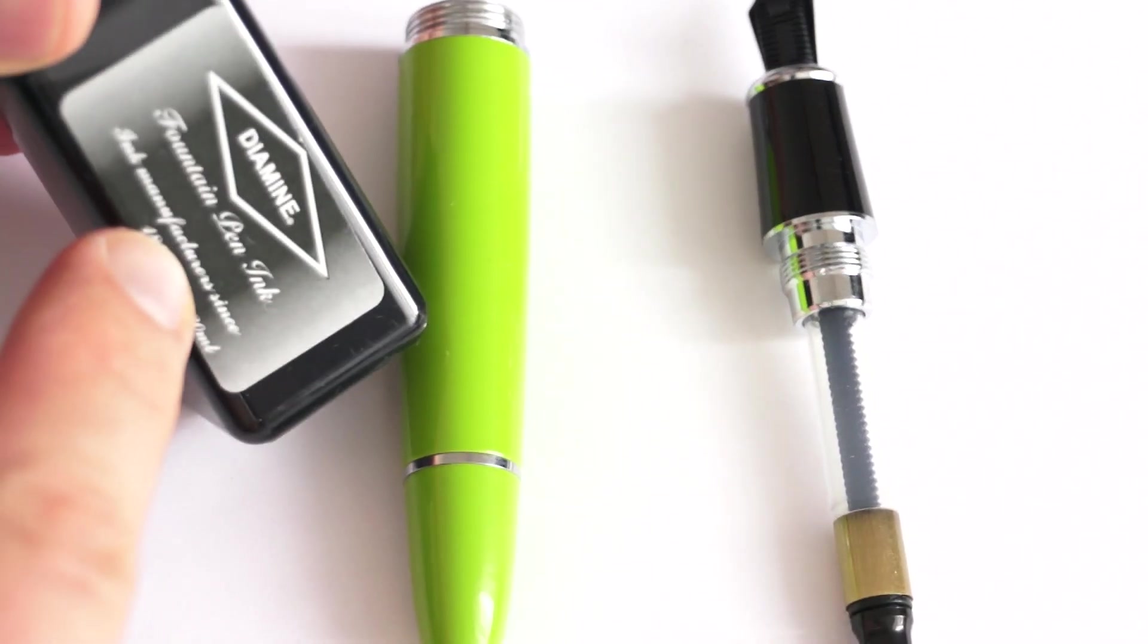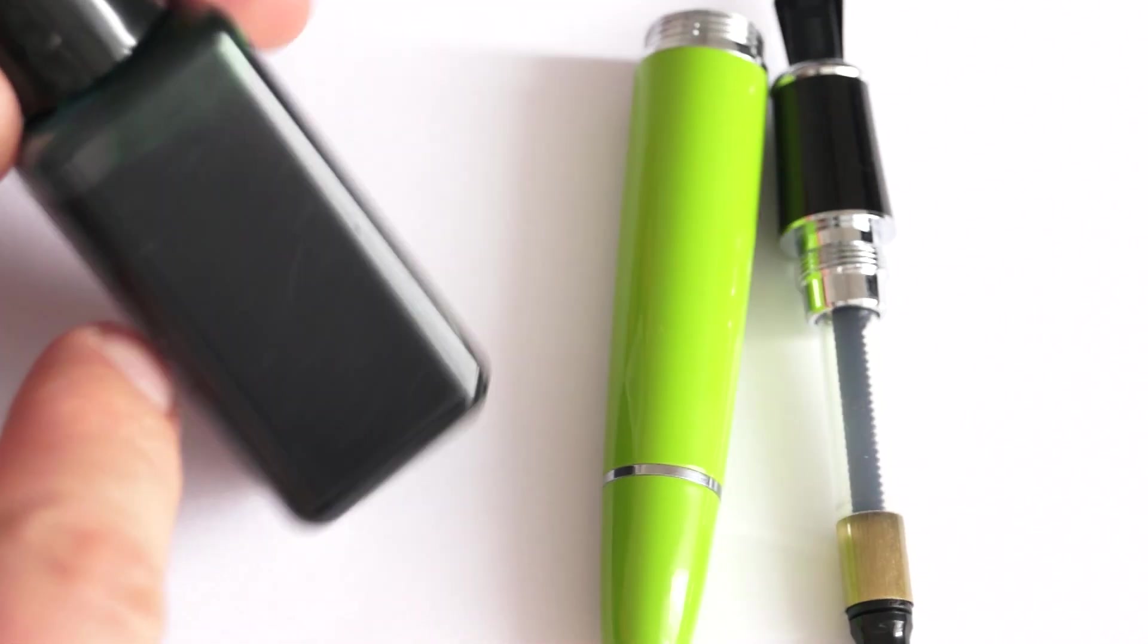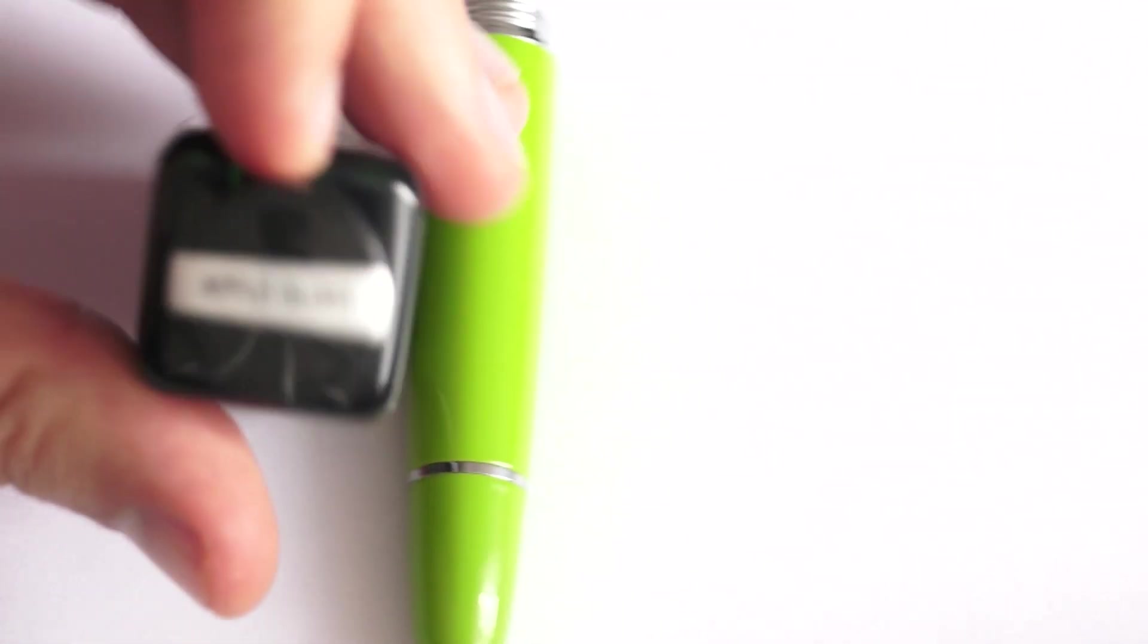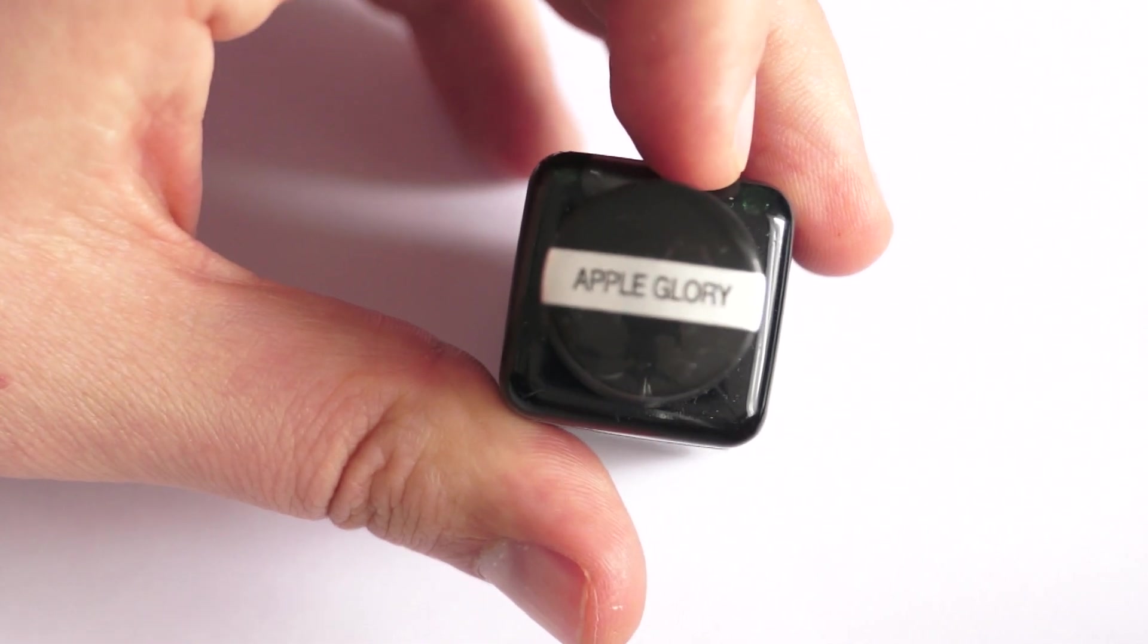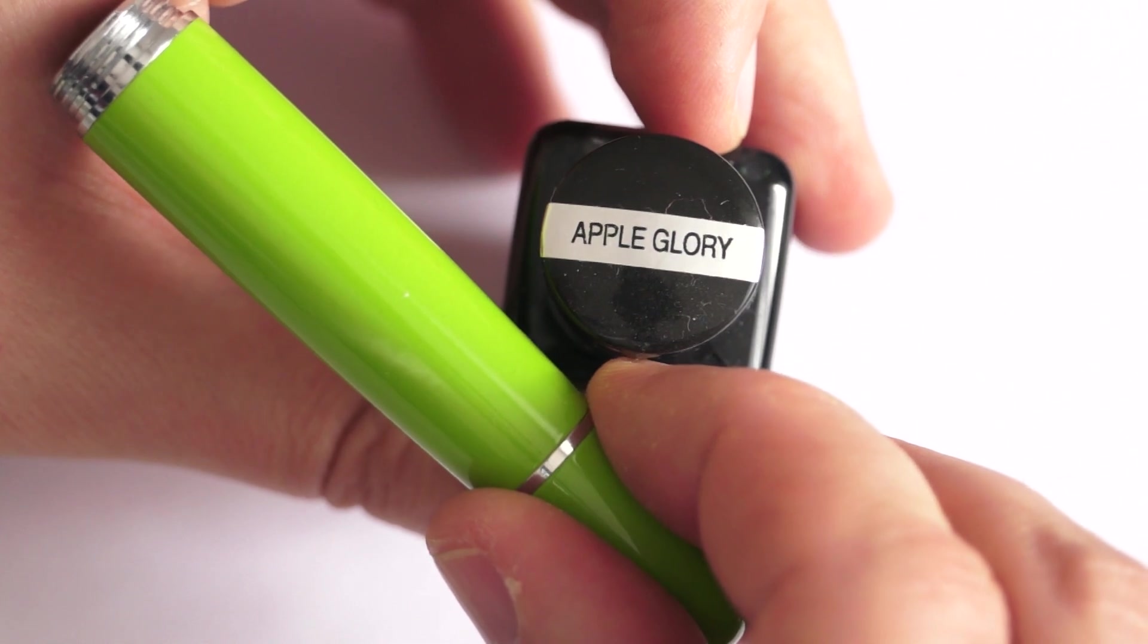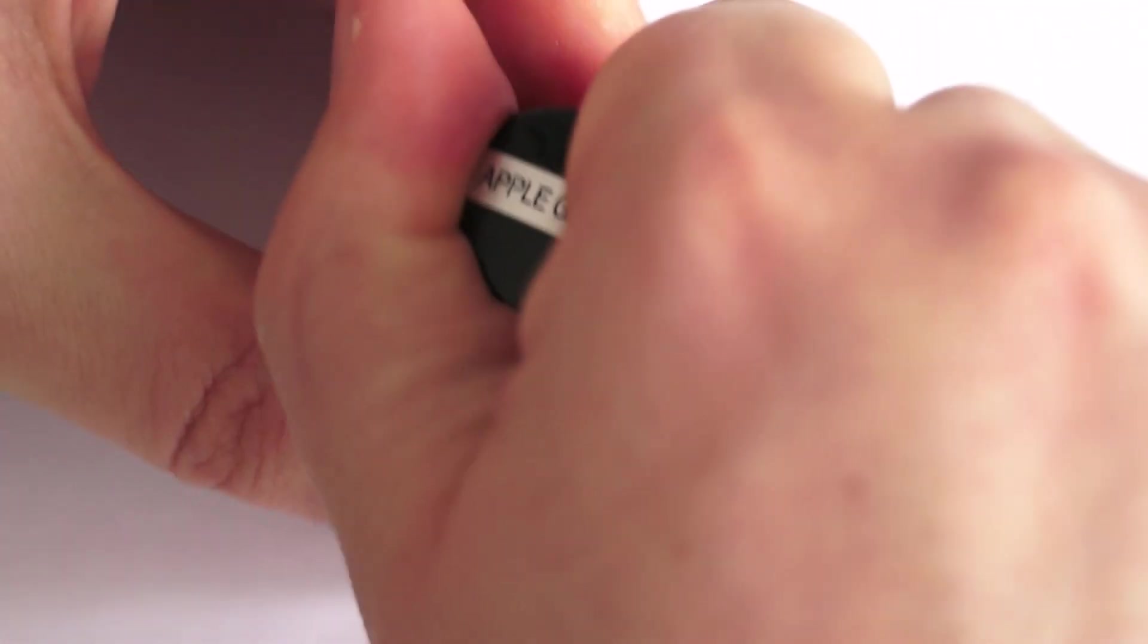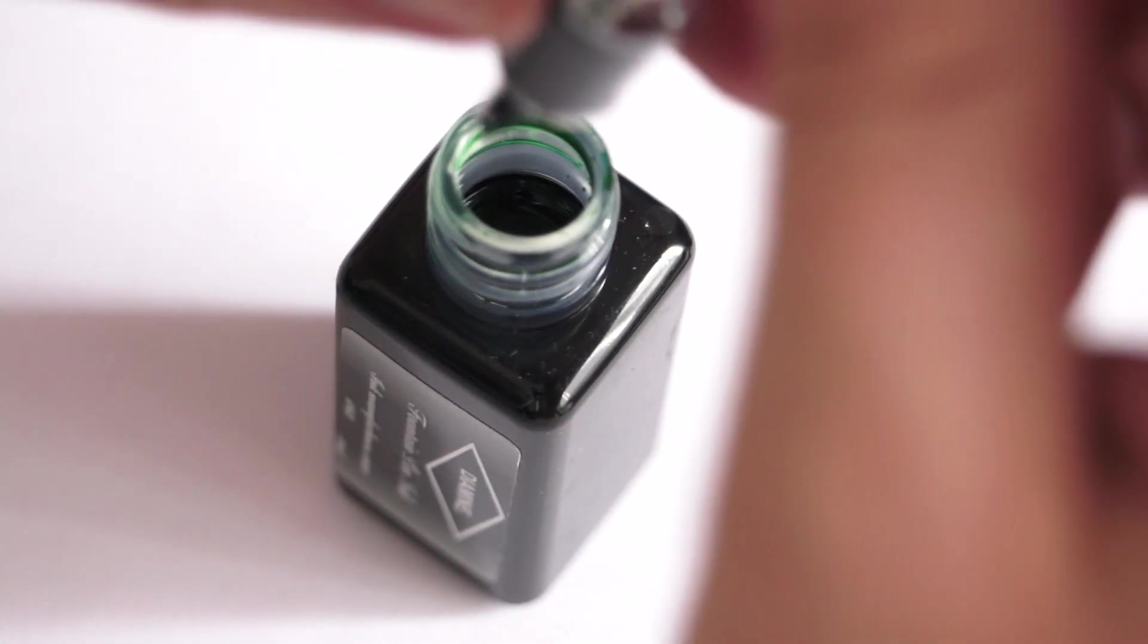I'm gonna fill this pen with a Diamine ink. If you can see it here, it's called Apple Glory ink, just because this green pen is apple green. I'm gonna fill this pen with Apple Glory ink which is also very interesting green.